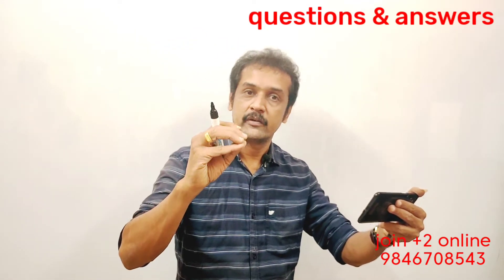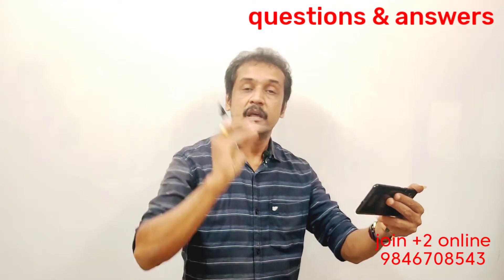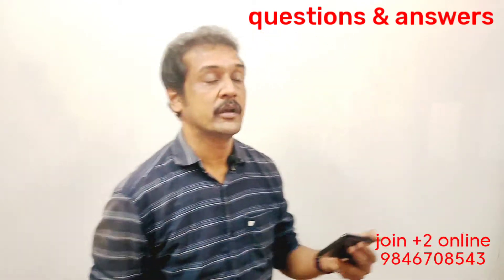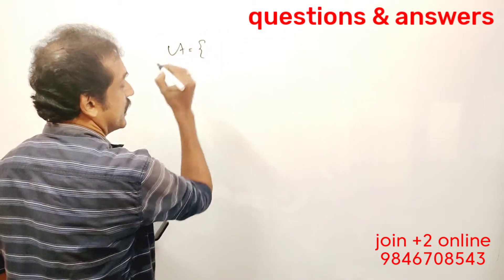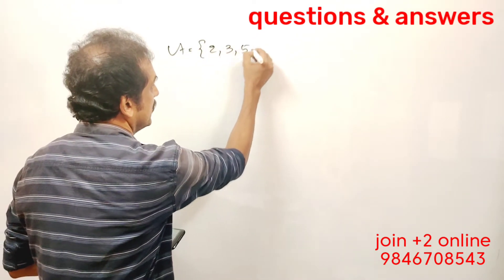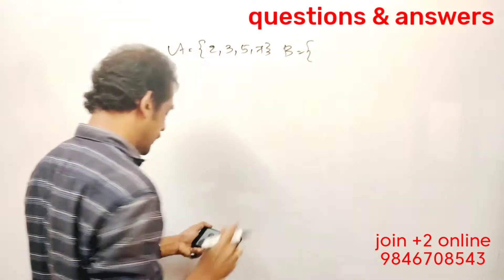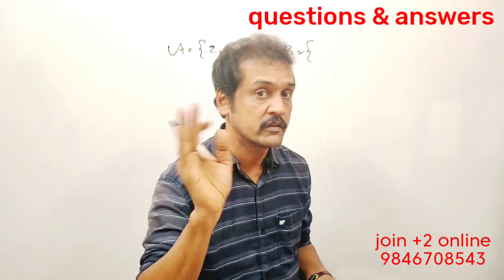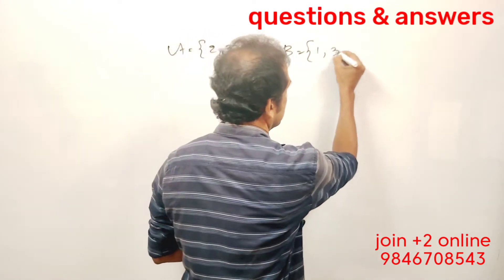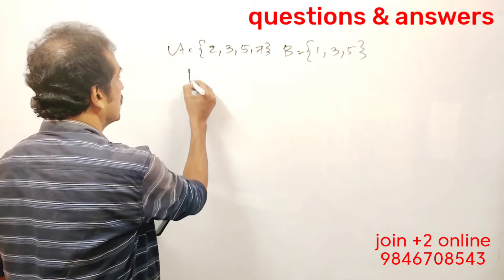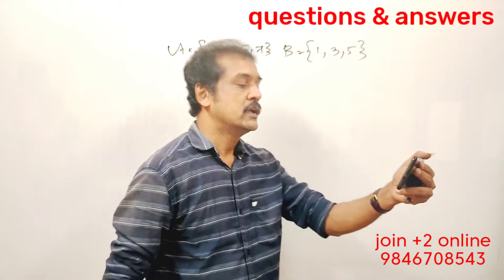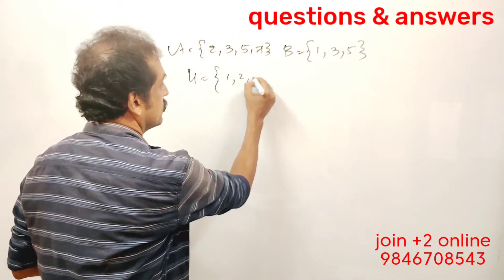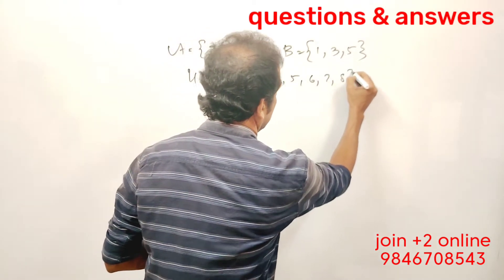Second question. A is defined by set builder formula: A = {x : x is a prime number less than 10}, so A = {2, 3, 5, 7}. B = {x : x is an odd natural number less than or equal to 5}, so B = {1, 3, 5}. U = {x : x is a natural number less than 9}, so U = {1, 2, 3, 4, 5, 6, 7, 8}.